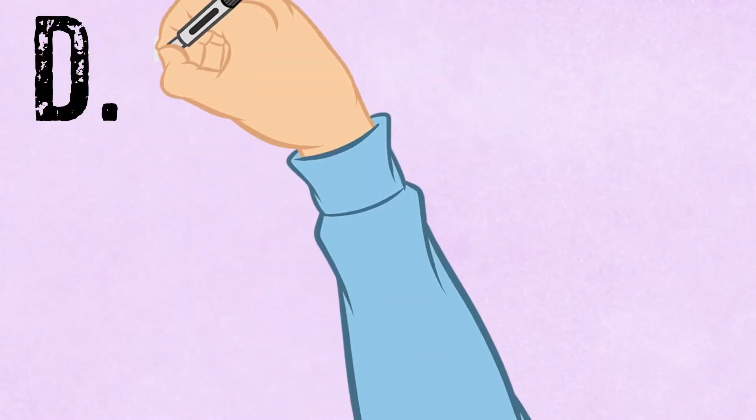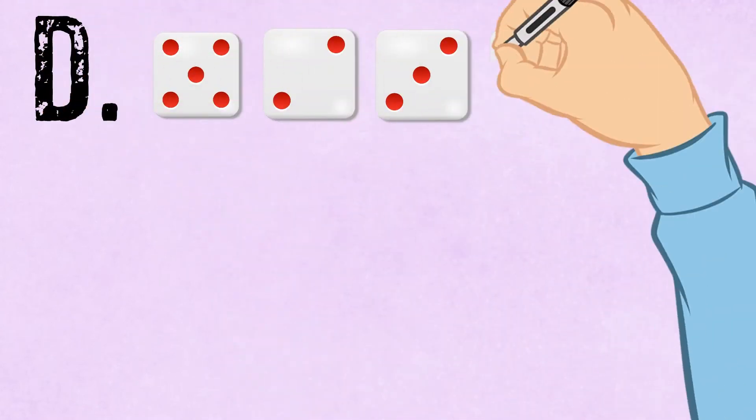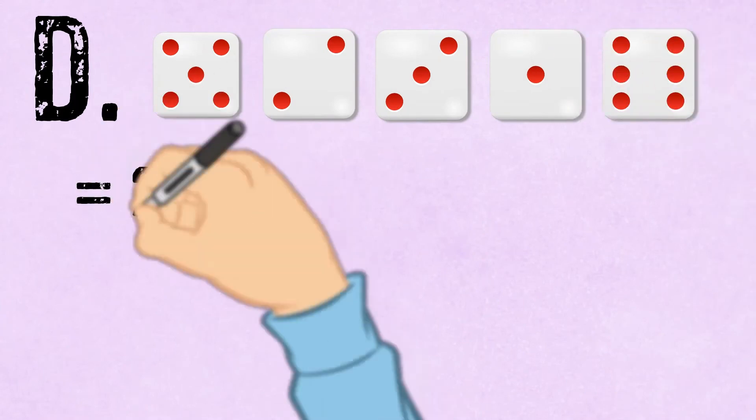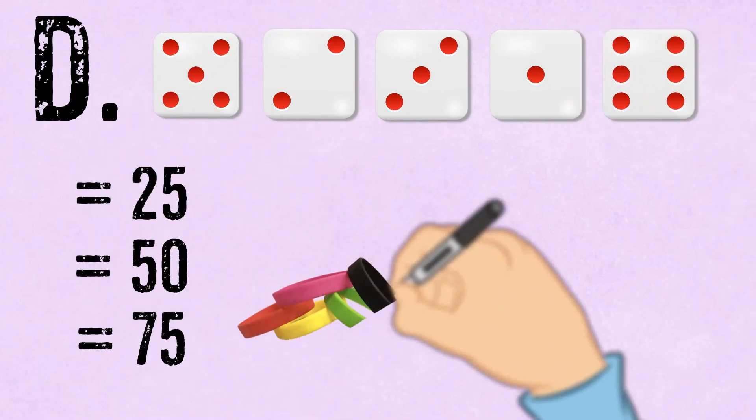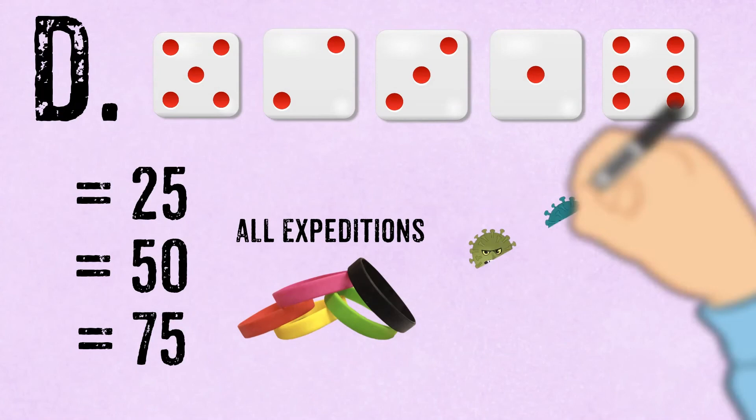Every day, we will also add the total amount of the dice. And when the total reaches 25, then 50 and then 75, all of the expedition areas will be infected.